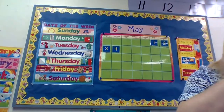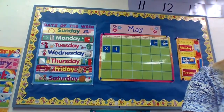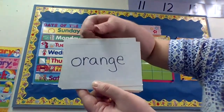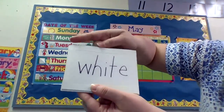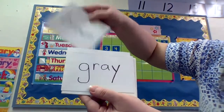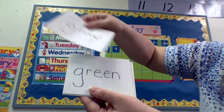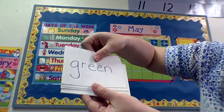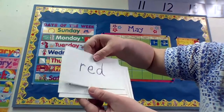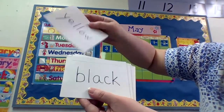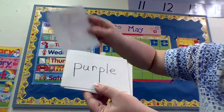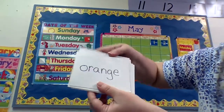Let's continue with our color words. Ready? Orange, white, brown, gray, green, pink, red, yellow, black, blue, purple. Back to orange.